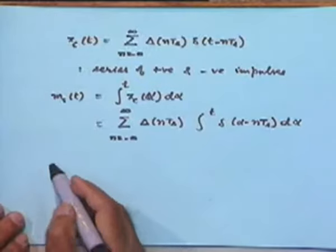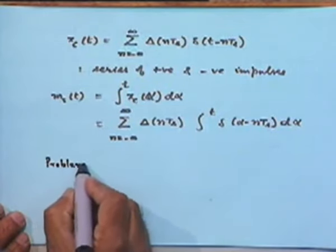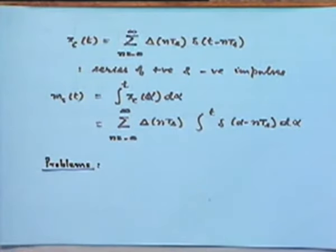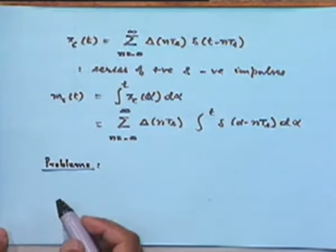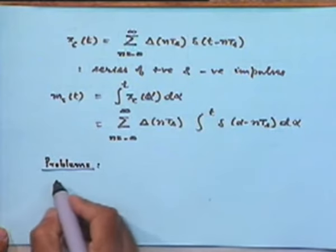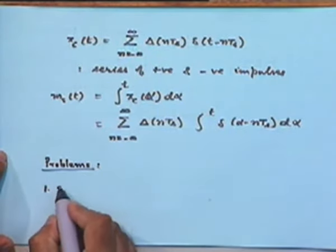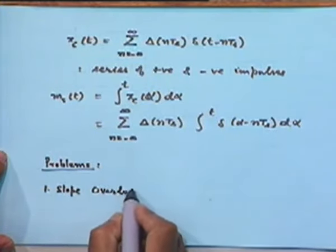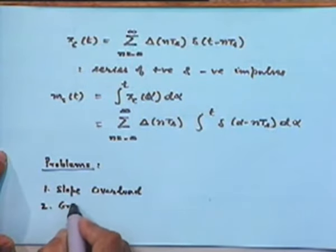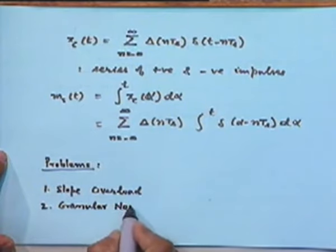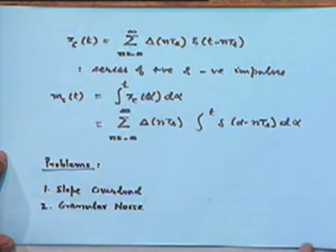Now we said we must produce a good approximation, and to produce a good approximation, we must understand what kind of problems might arise. Problems with this simple delta modulator: there are two kinds of problems, and they are both slightly contradictory to each other. One is called the slope overload problem, and the other is called the granular noise problem.